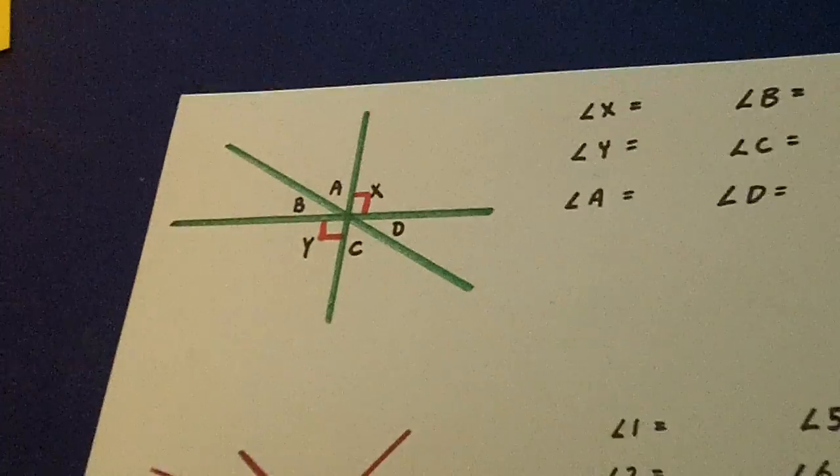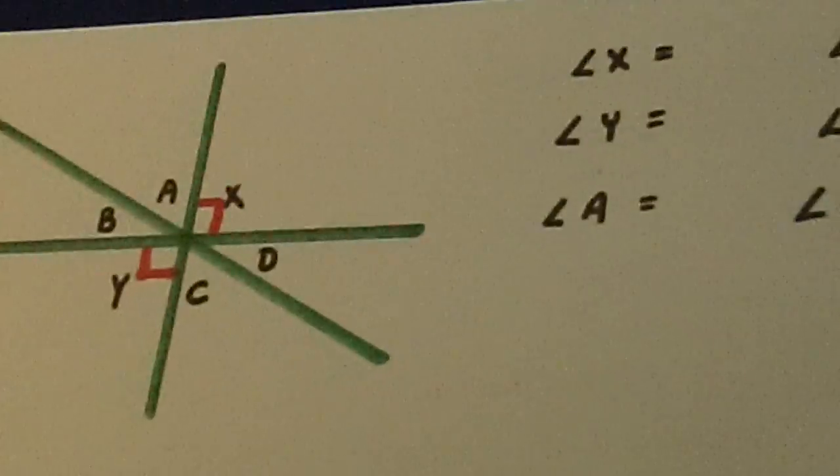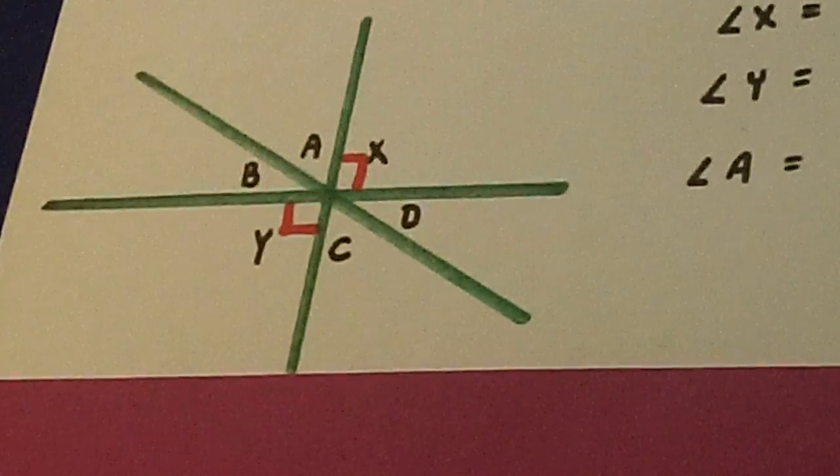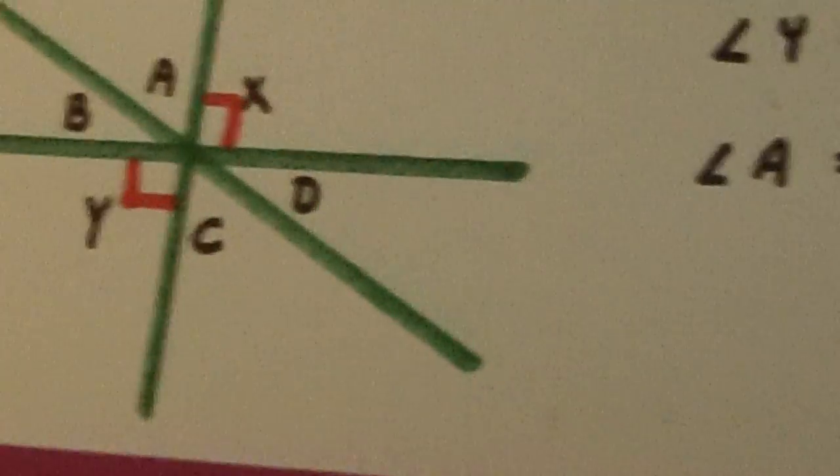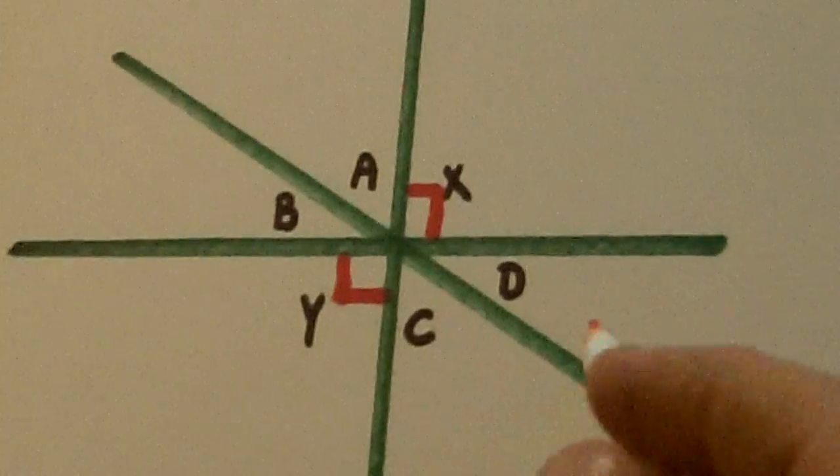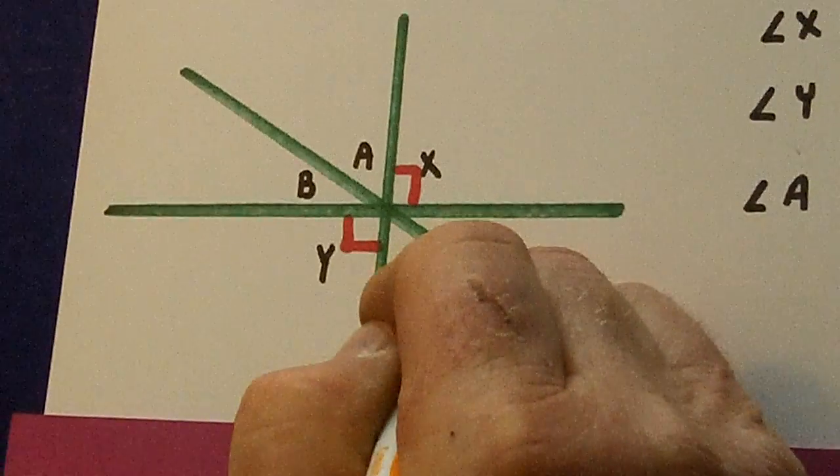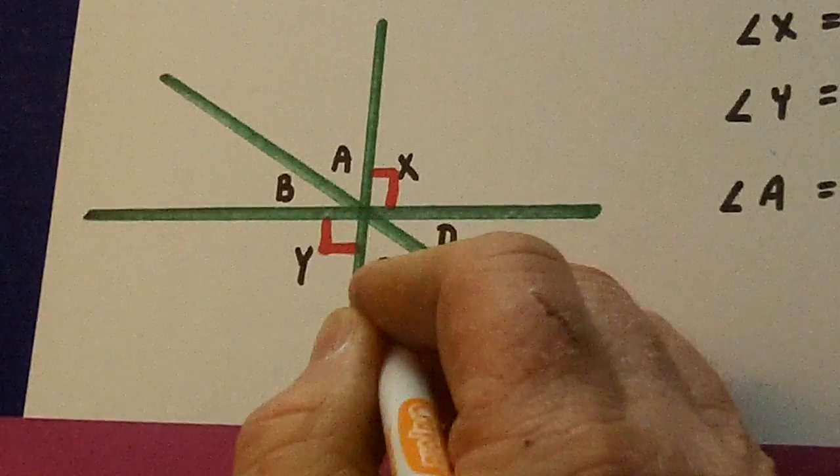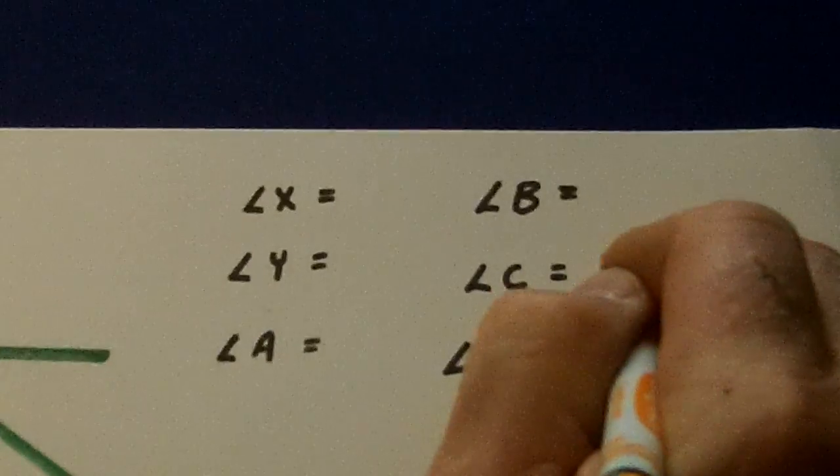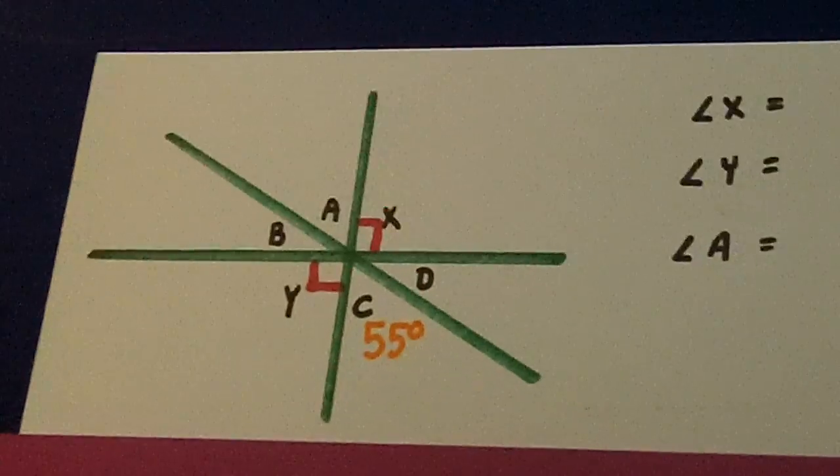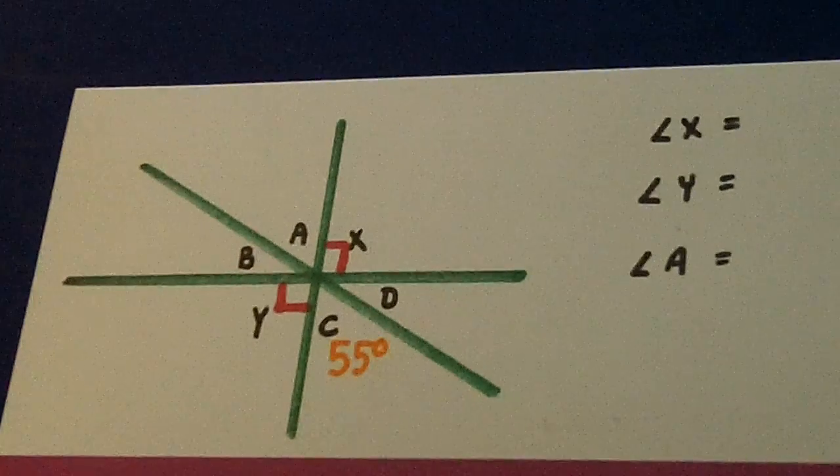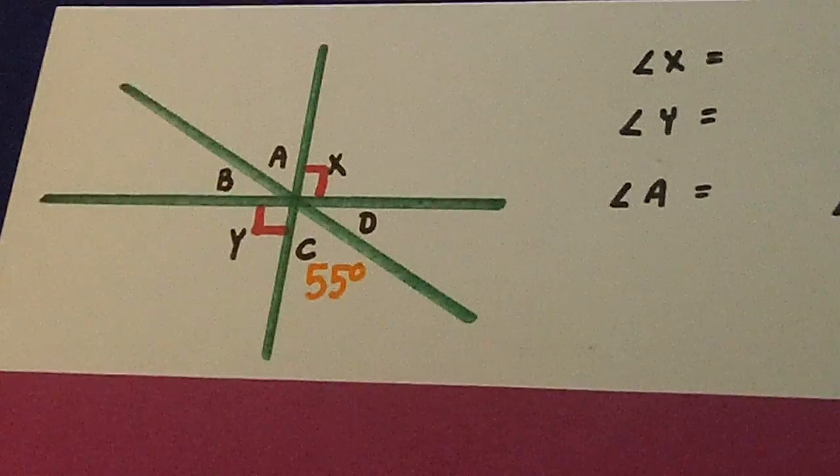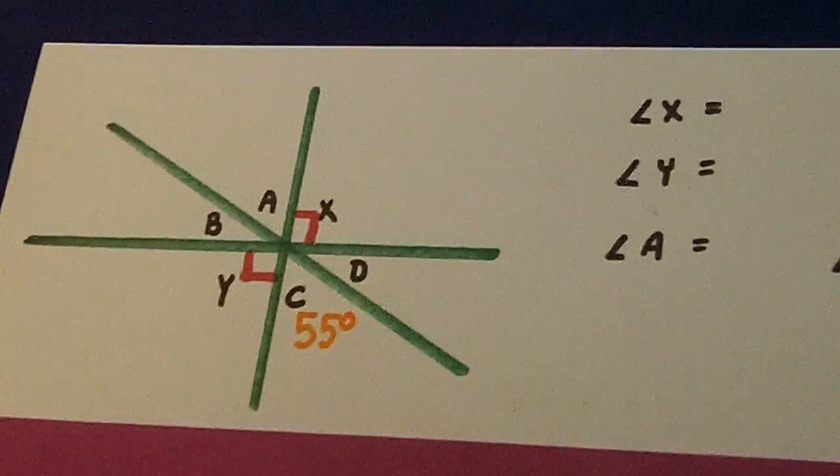Now we get into some tricky ones. Some kids go, boy, that's pretty tricky. Let's go right up here. Now what we're going to do is, we are going to just say that one of these is 55 degrees. C is 55. So what a test or a teacher is going to do is give you just one of these, and then they'll say figure out the rest on your own. And you go, well, I don't have a protractor. So you have to use your brains.